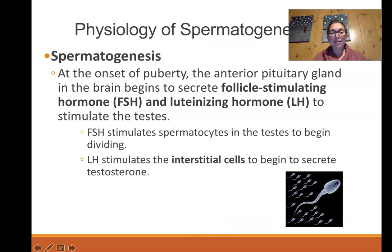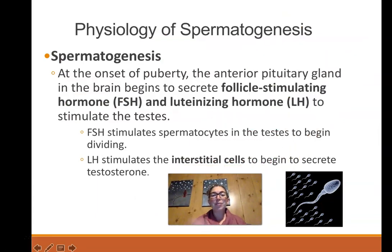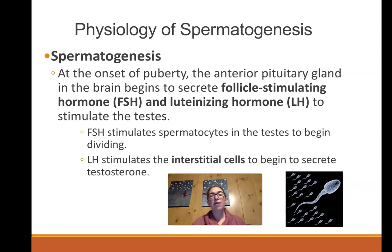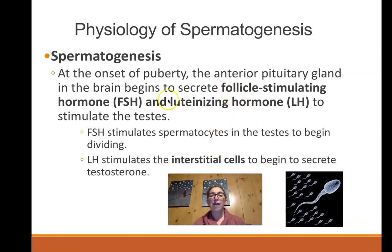Sperm production is called spermatogenesis — the generation of sperm — and it begins at the onset of puberty. Male children do not produce sperm; they have spermatocytes in their testes, but these don't develop into spermatozoa until the proper hormones are produced at puberty. Puberty starts in the brain: the pituitary gland begins to secrete two important hormones — follicle stimulating hormone (FSH) and luteinizing hormone (LH). These are the same hormones that induce female puberty as well.